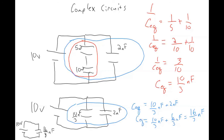There's one more equation we need, related to the energy stored on a capacitor. The energy stored on a capacitor is U = qV/2. Using the Q = VC relation, you can write different permutations: this could also be written as CV²/2 or q²/2C.